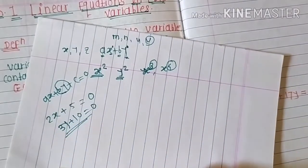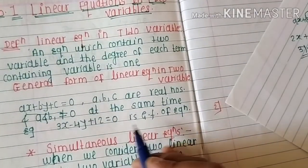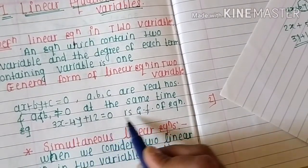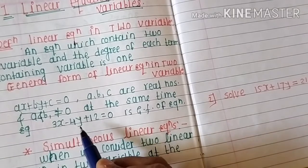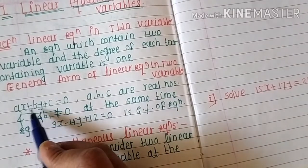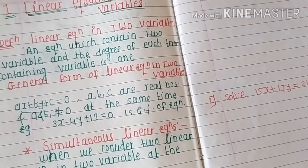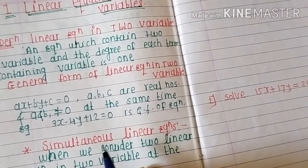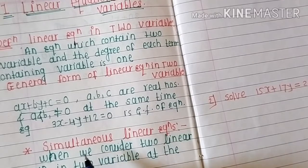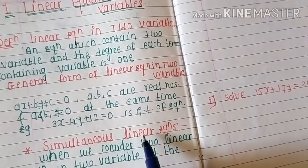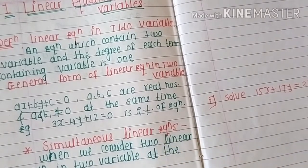For example, 3x minus 4y plus 12 equals zero is the general form of a linear equation in two variables. We will also study simultaneous linear equations — two linear equations in two variables considered at the same time.